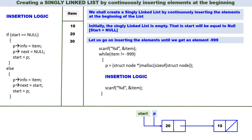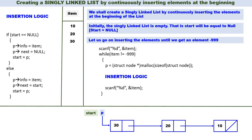Again read one more item: 30. Go back to the while loop — 30 is not equal to minus 999. Therefore create a new node pointed by P and go to the insertion logic. Start is not equal to null — start contains the address of 20 — so we go to the else part. P of info is equal to item, so 30 will come here. P of next is equal to start, so node 30 is connected to 20. Then start is equal to P, meaning start will contain the address of node 30. Insertion logic is over.